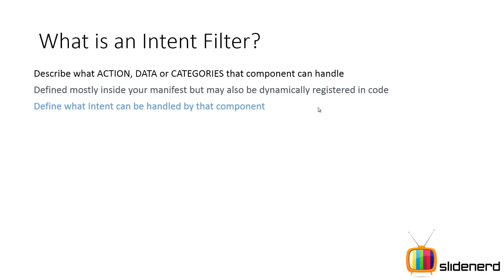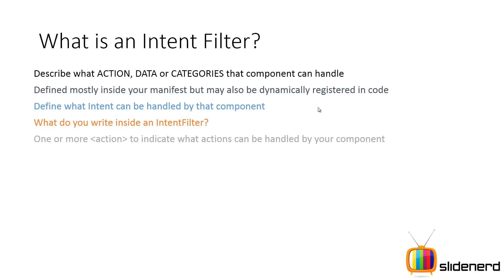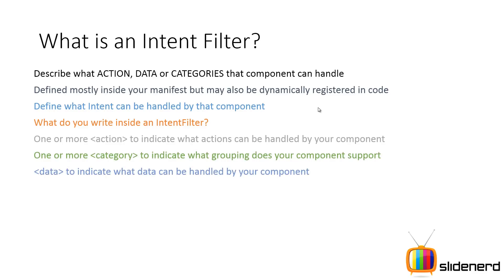For each activity, service, or broadcast receiver, if you want them to handle implicit intents, you have to declare intent filters — that's how they get compared. Inside an intent filter, you write one or more actions to indicate the possible actions your component handles, categories to define what categories you support, and data to indicate what data types you have.